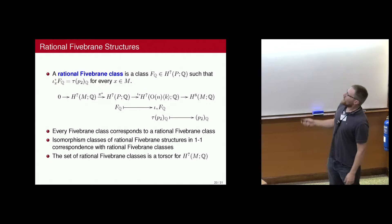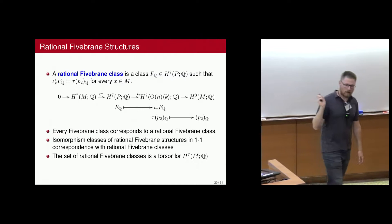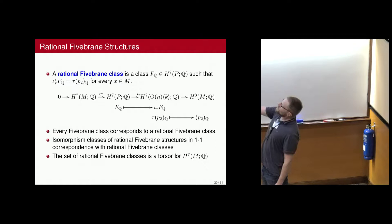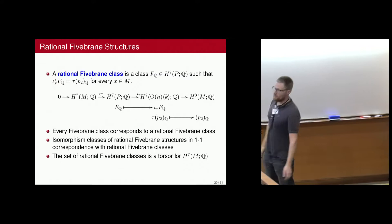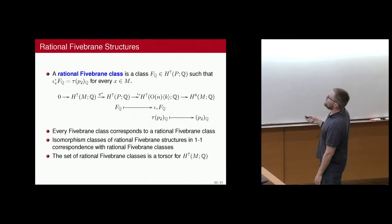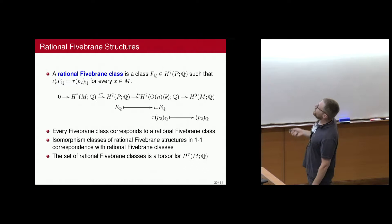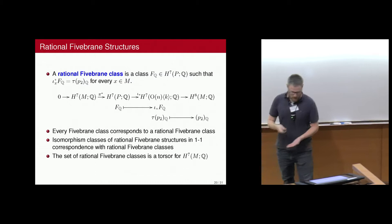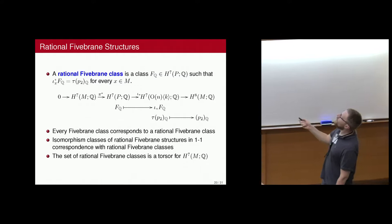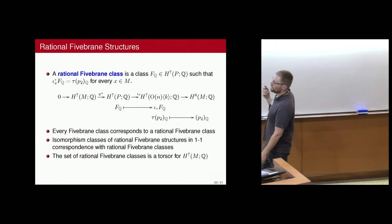Every 5-brane class — defined in the usual way — when you rationalize will correspond to a rational 5-brane class. Isomorphism classes of rational 5-brane structures are in one-to-one correspondence with rational 5-brane classes. So lifts from BString to B5Brane, up to isomorphism, are classified by such classes. The set of all classes is a torsor for degree-seven cohomology, which you can see from this exact sequence.